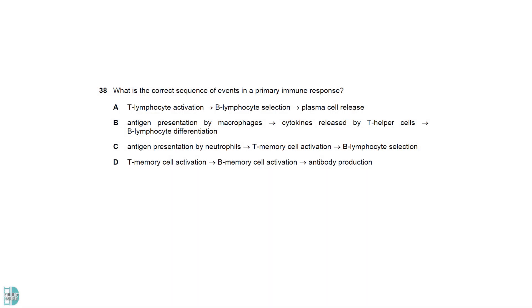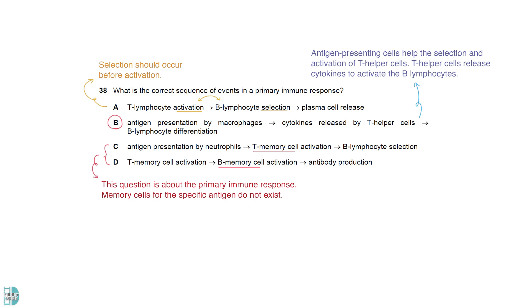A is wrong because selection should occur before activation. B is correct. Antigen-presenting cells help the selection and activation of T helper cells. They release cytokines to activate the B lymphocytes. C and D are wrong because this is about the primary immune response. Memory cells for the specific antigen do not exist.